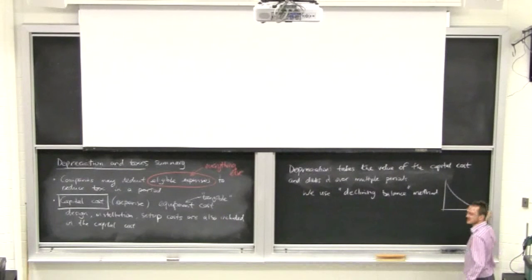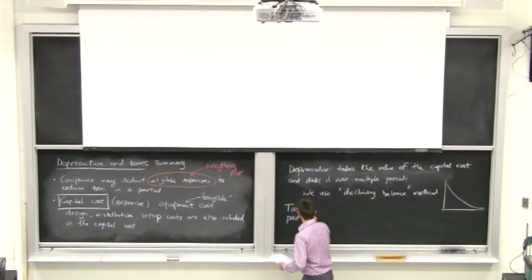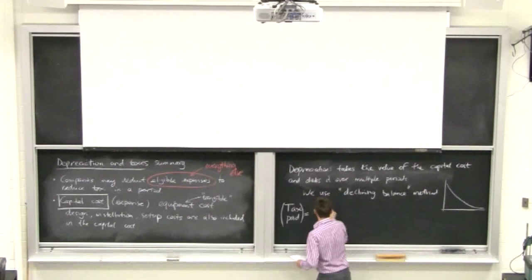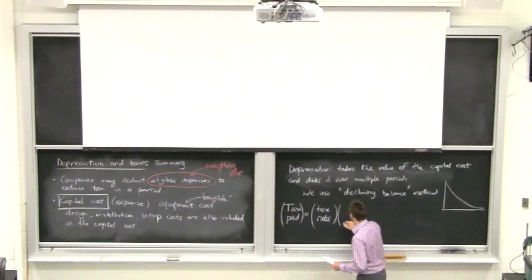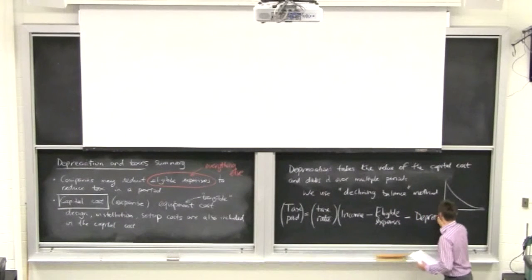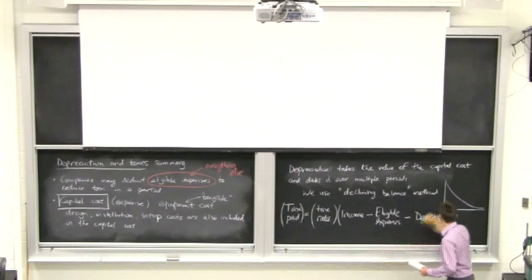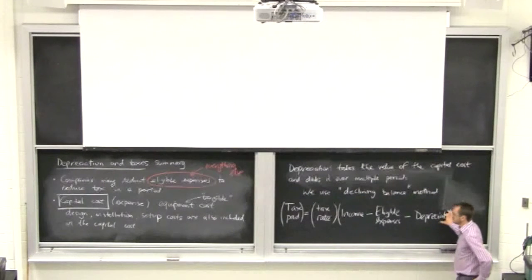Towards the end of equipment life, there's deterioration and newer technology becomes available. So as an encouragement, the government lets you deduct a lot up front and less at the end, encouraging companies to replace equipment. Looking at the tax formula: tax paid equals tax rate times the quantity of income minus eligible expenses minus depreciation. If companies increase eligible expenses or depreciation, they reduce their tax.